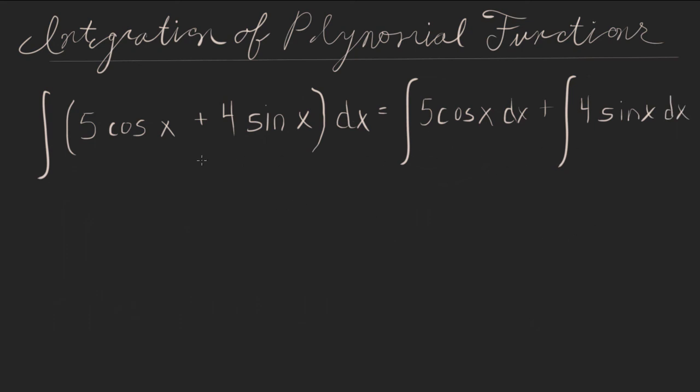So this will equal 5 cosine x dx plus the integral of 4 sine x dx. Using a rule that I went over in a previous video, we can bring the constant to the front. So I'll just write that in a different color. I'm not going to rewrite the entire problem for that. Or maybe I will. I will rewrite the entire problem. So we'll have rewritten, we'd have 5 times the integral of cosine x dx plus, and then we're going to bring the 4 out front, 4 times the integral of sine x dx.